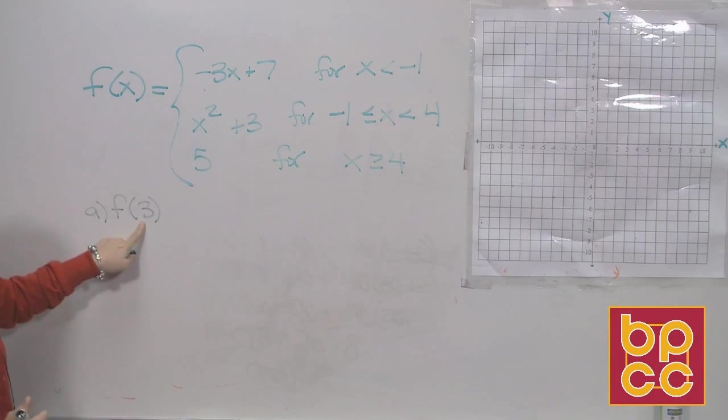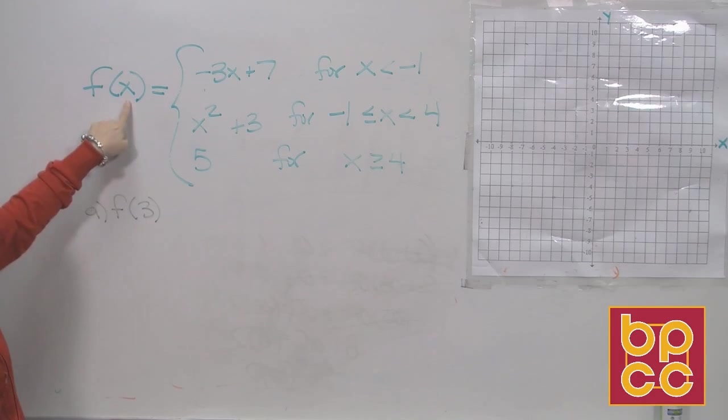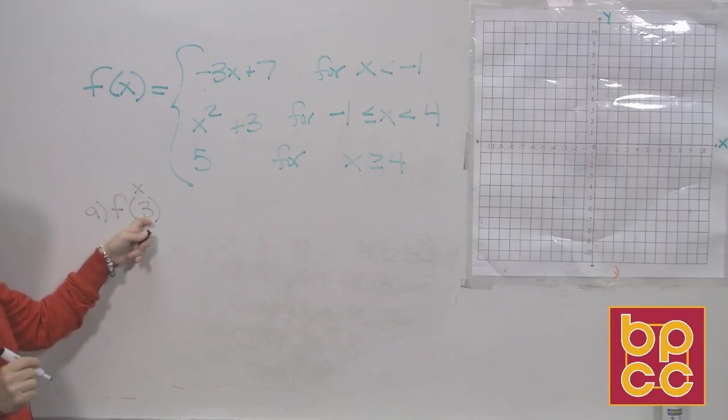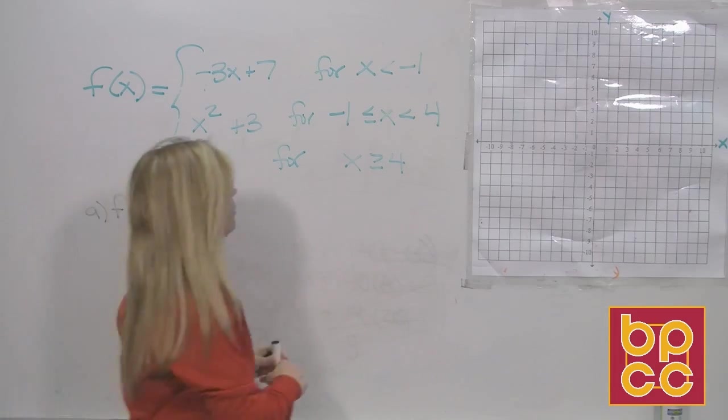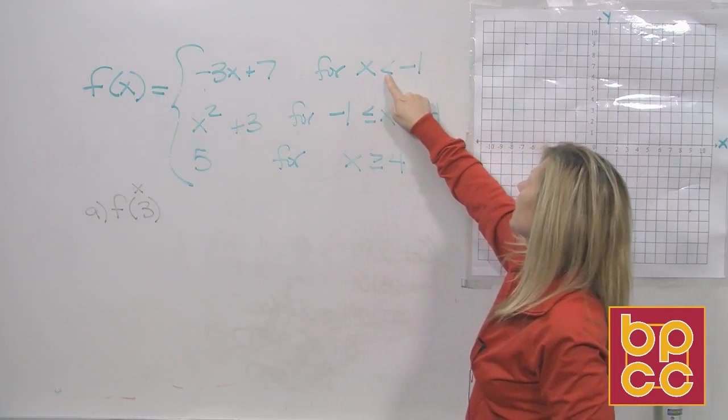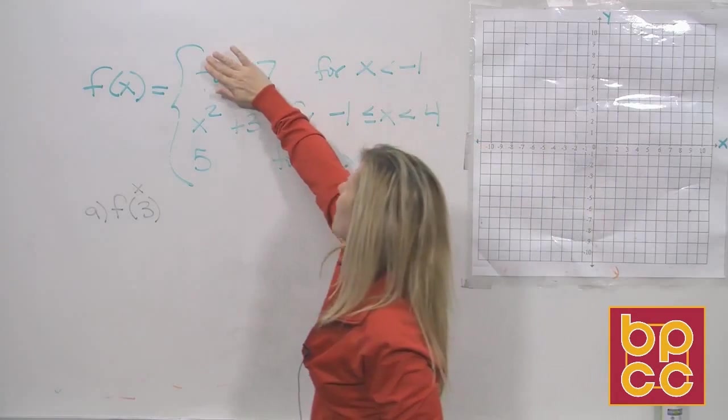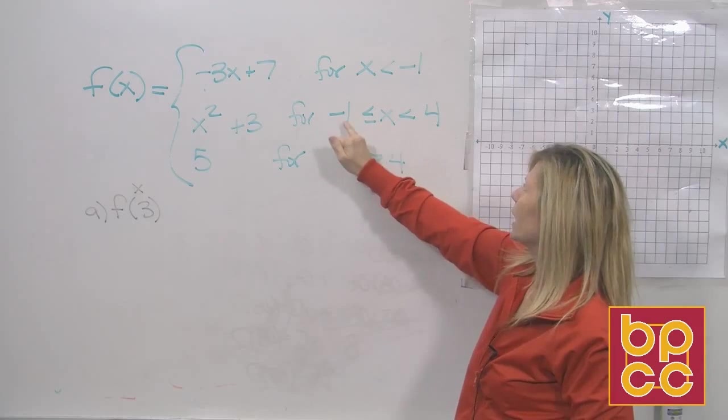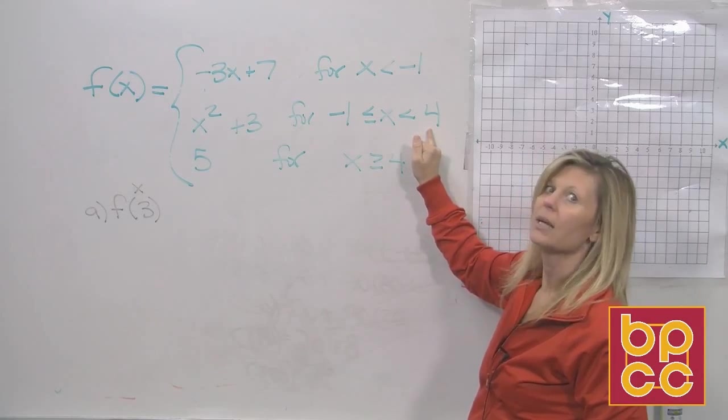All right. This variable, we've already discussed this in function notation. This number is in the variable, the place of x. So this is your x value. You know x is 3. Well, is 3 less than negative 1? No. So we're not using the top piece. Is 3 in between negative 1 and 4? Yes, it is.